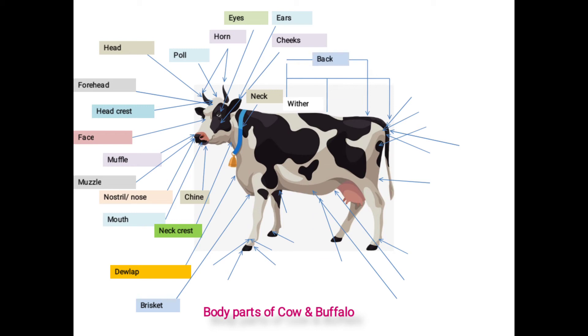Third region called as body. This portion situated between the hump and sacrum. First one is withers. Upper higher part of shoulder is called as withers, or a fleshy portion below the hump and above the shoulder is called as withers.